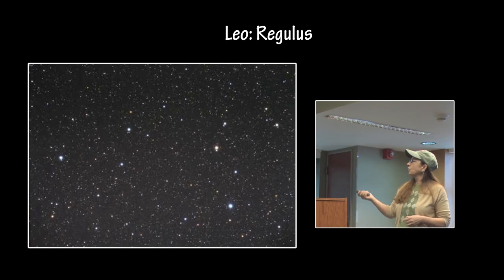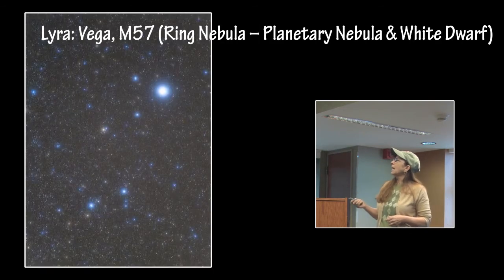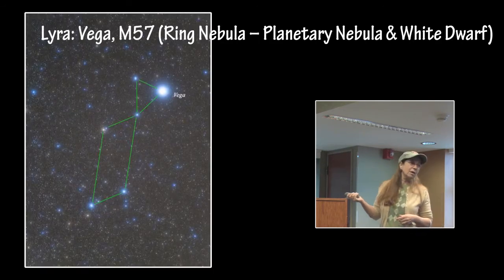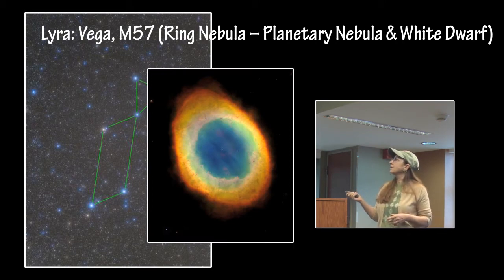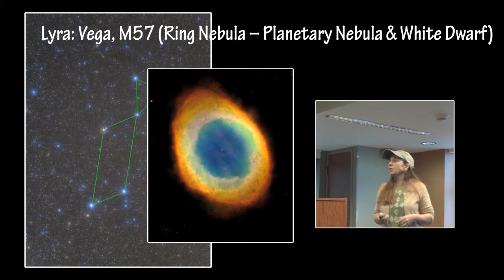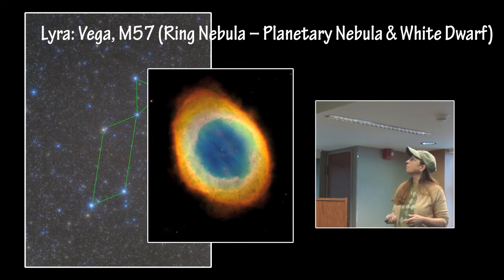Then we have Leo with Regulus. In Lyra we have M57, called the Ring Nebula. This is another example of a planetary nebula with a white dwarf in the center that resulted from the core collapse of a mid-sized, sun-sized star.